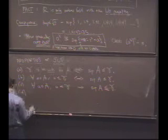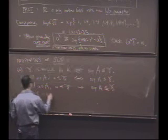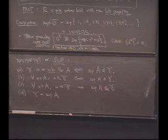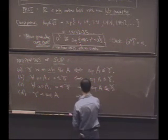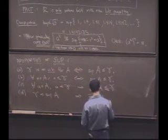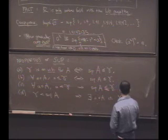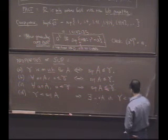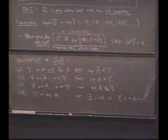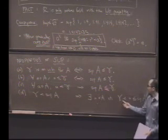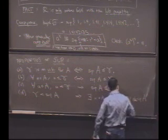Let's write down another property. What if gamma is less than the supremum of A? Here's something we've implicitly used already but worth noting: if you have a number strictly smaller than the supremum, then there exists a little a in big A such that little a is bigger than gamma and less than or equal to the supremum of A. If there's a number smaller than the supremum, there must be something in the set strictly bigger than gamma — it might be equal to the supremum.